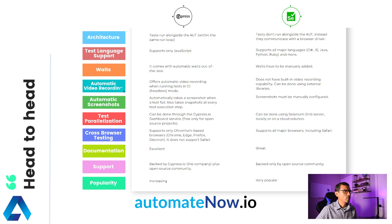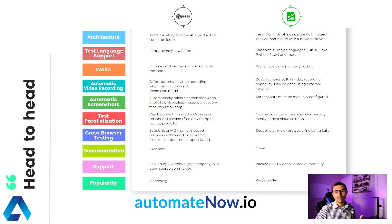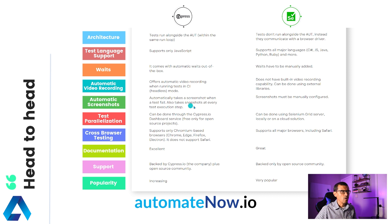Next, we have automatic video recording. When a Cypress test runs, it will automatically record a video of the test run, and this happens when you're running your tests in continuous integration or headless mode. Selenium does not have built-in capabilities that allow us to record our tests as they run, but this can be accomplished using external libraries. Next, we have automatic screenshots — Cypress will automatically take a screenshot every time that a test fails. With Selenium, on the other hand, you have to program this manually. Cypress will also take snapshots at every test execution step, meaning that for every line of code, you can step through it and see what happened when that step executed.